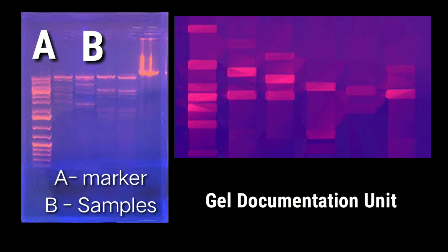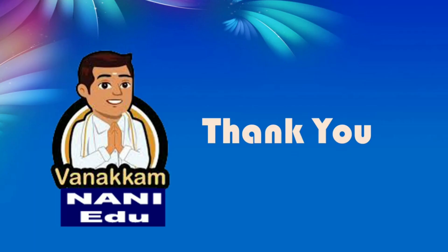Now keep the gel on the transilluminator and switch on the UV light. Observe the bands and take a photograph — this is called gel documentation. It is very useful for all students. If you have any doubt, comment in the comment box and I will tell you. To prepare ethidium bromide: 0.2 gram ethidium bromide in 20 ml distilled water. Please comment if you have any questions. Namaste!